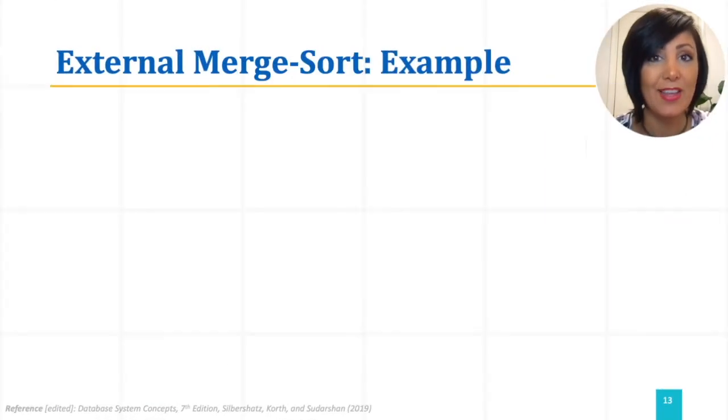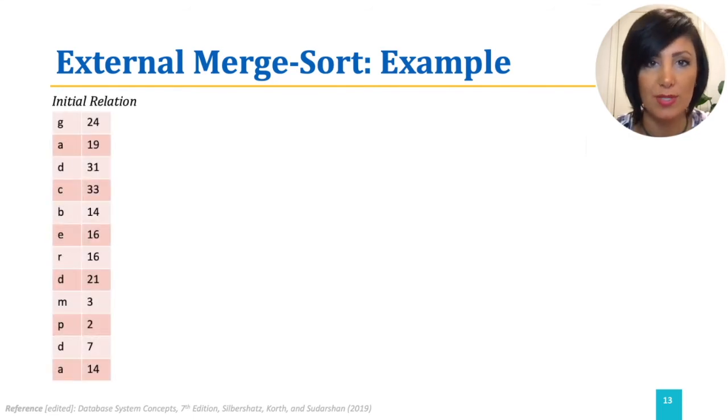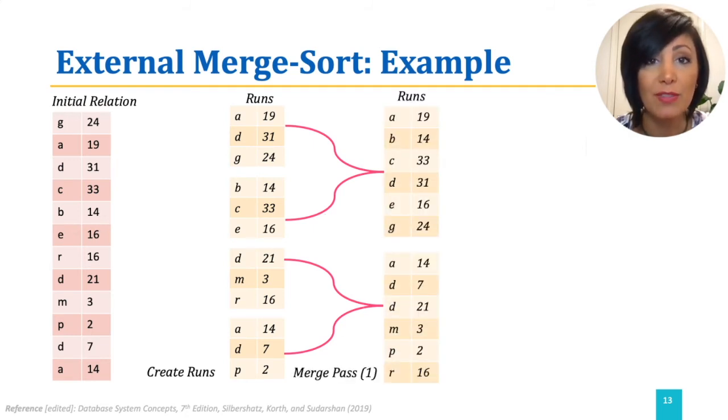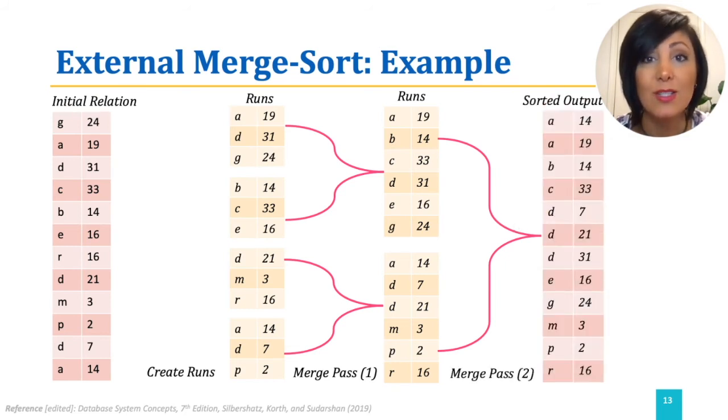Let's see this with an example. Assume we have a relation with 12 tuples. In pass 0, we create 4 one-page sorted runs. In merge pass 1, we produce 2 sorted runs, each by merging the 2 of the sorted runs in the previous step. After merge pass 2, we finally produce a single sorted output file by merging the two two-page sorted runs.